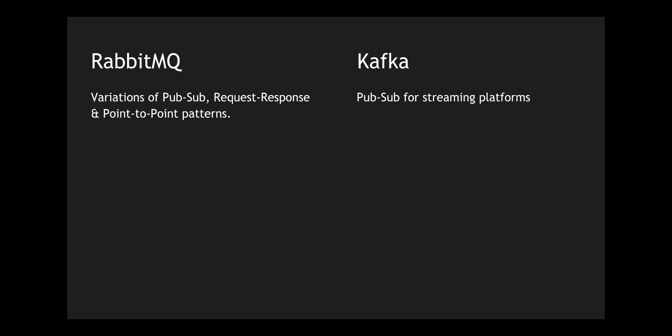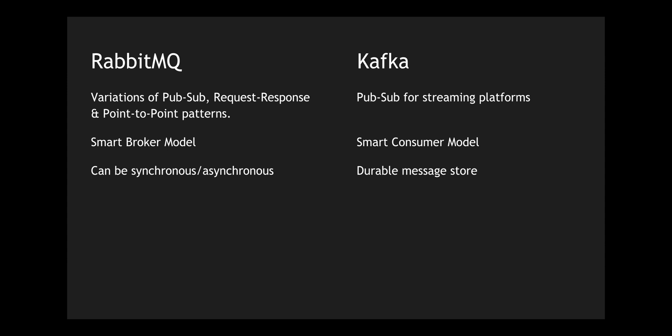RabbitMQ deploys a smart broker model where you can leverage RabbitMQ to intelligently route traffic across different queues. Kafka on the other hand leverages the consumer to decide what kind of intelligence you want to bake in, so the broker itself doesn't take any routing decisions on the type of messages you push into Kafka. RabbitMQ can be either asynchronous or synchronous — you can have acknowledgments for messages delivered to consumers.